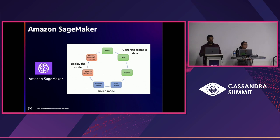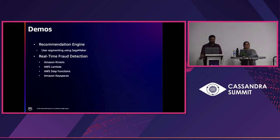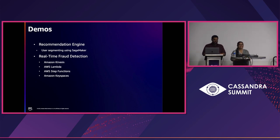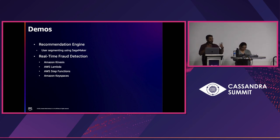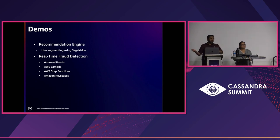Thank you, Ekta. I'm Himanshu Jandal. So let's go into the demos. I'll try to do something very brave — I'll show two demos in real time. The first is we're going to run a recommendation engine using SageMaker: I'll show how you can train your data, read from Keyspaces, create segments, and store them back in Keyspaces. We'll also do a real-time fraud detection exercise — pumping data into Kinesis, having our machine learning algorithm predict based on training, and inserting that data into Keyspaces.